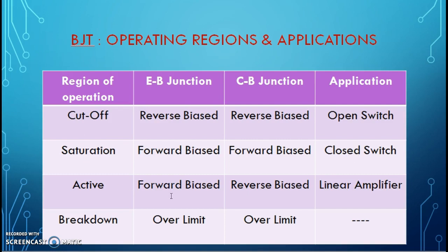In the active region, emitter-base junction is forward biased and collector-base junction is reverse biased. The transistor action takes place and it can be used in the linear amplifier application. As I have already mentioned, if the limits of junction parameters are increased, the biasing is increased, then the breakdown region will take place.